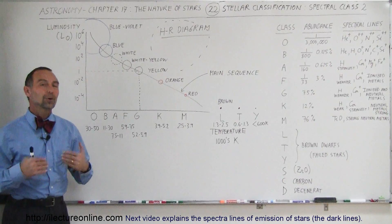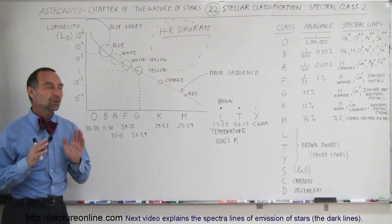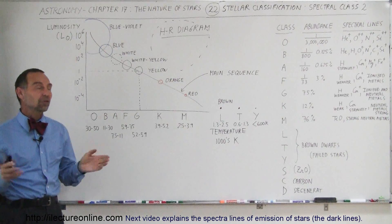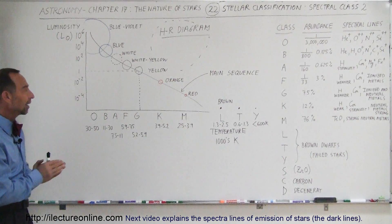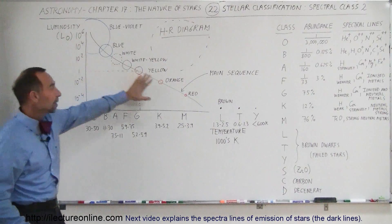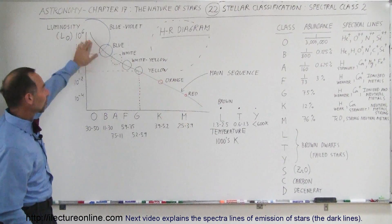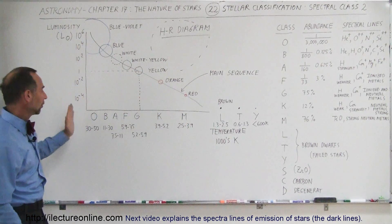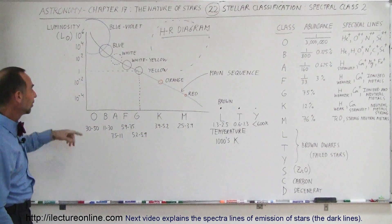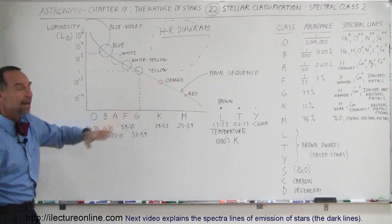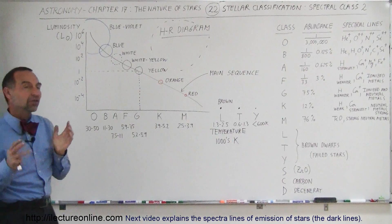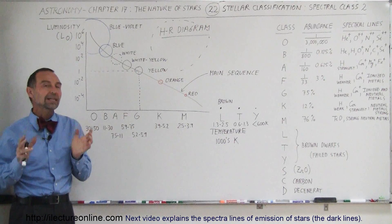Welcome to Electronline. We're going to go into a little more detail on stellar classification, especially in the area of spectral class. As seen in the previous video, we have the HR diagram, and we're talking about the stars on the main sequence and how they were separated into what we call their spectral class: O, B, A, F, G, K, M — the different kinds of main sequence stars.